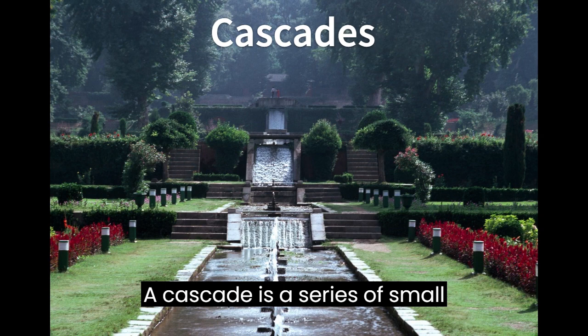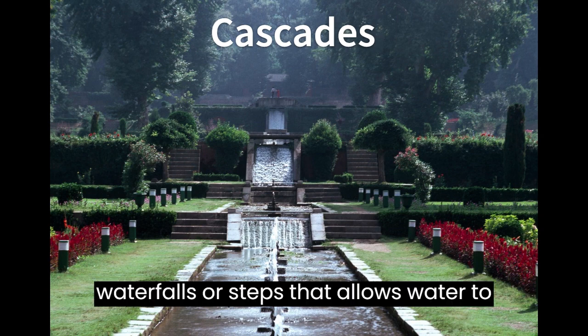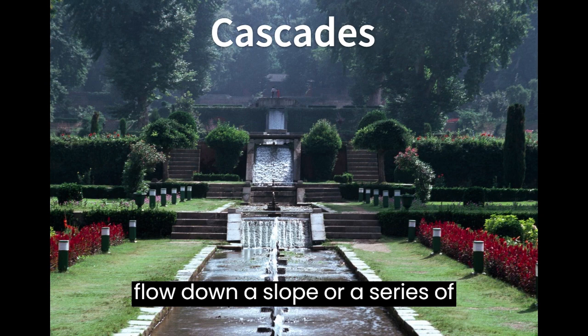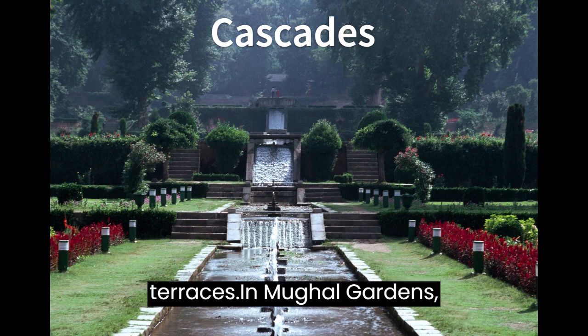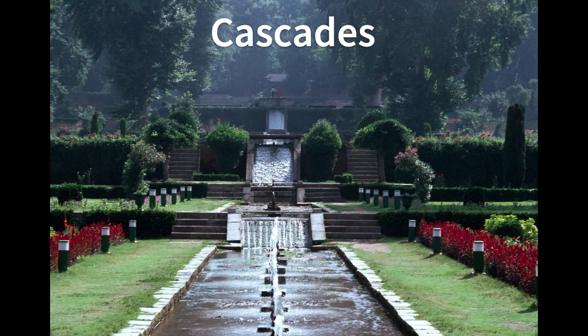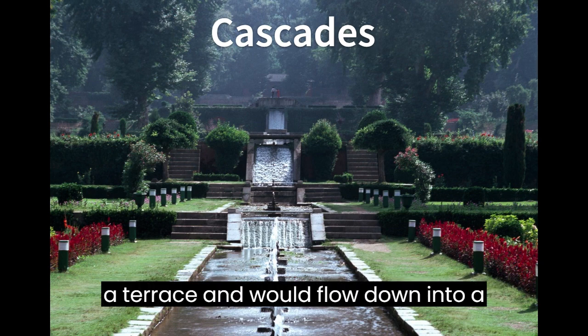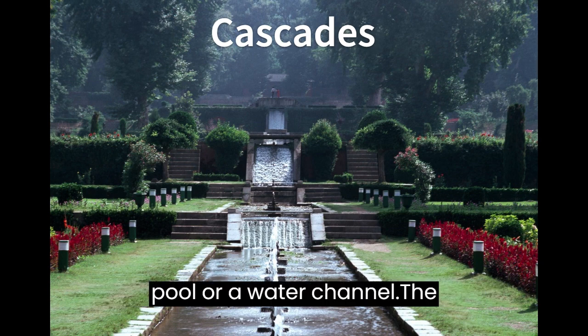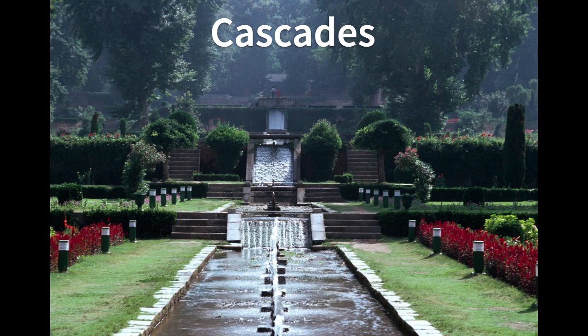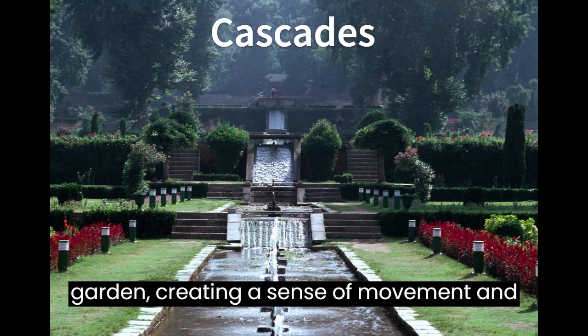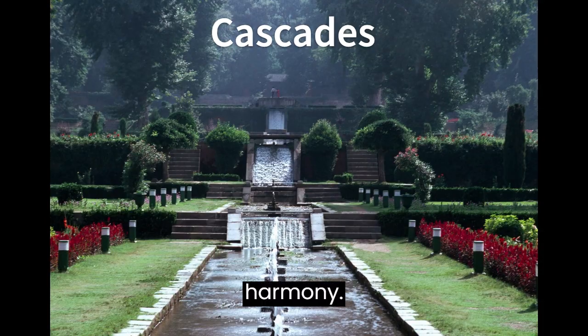A cascade is a series of small waterfalls or steps that allows water to flow down a slope or a series of terraces. In Mughal gardens, cascades were often built at the edge of a terrace and would flow down into a pool or a water channel. The water would then flow through the garden, creating a sense of movement and harmony.